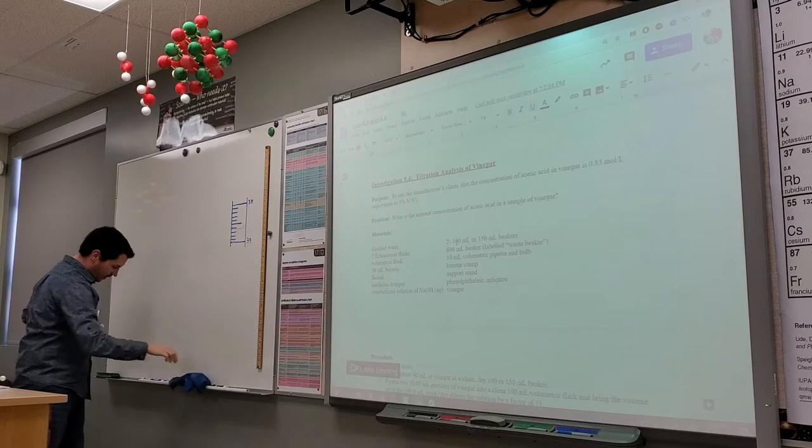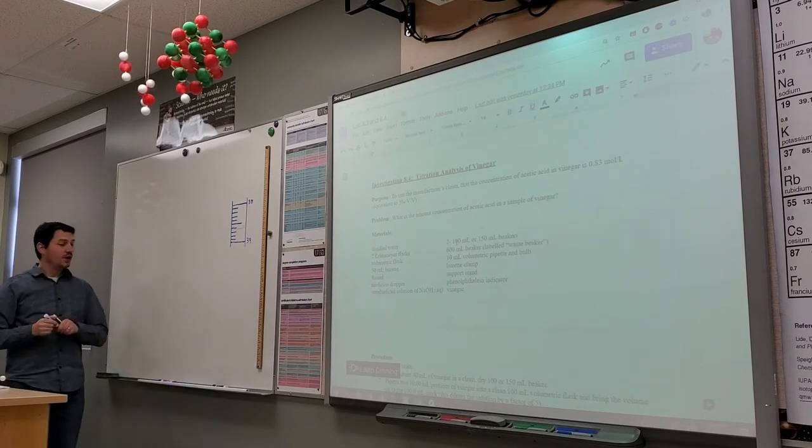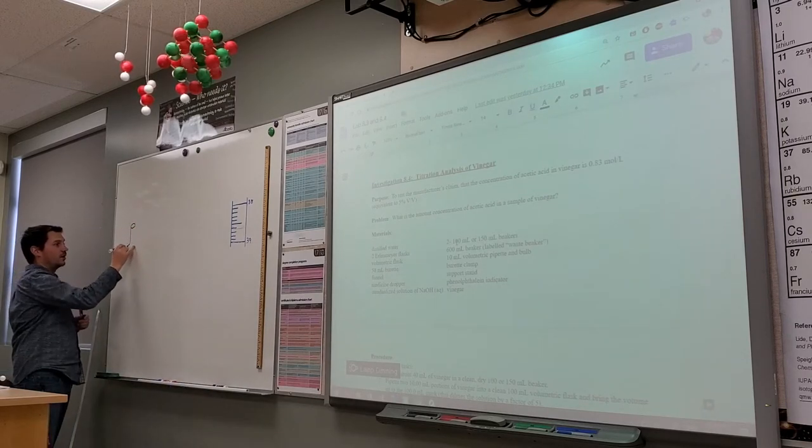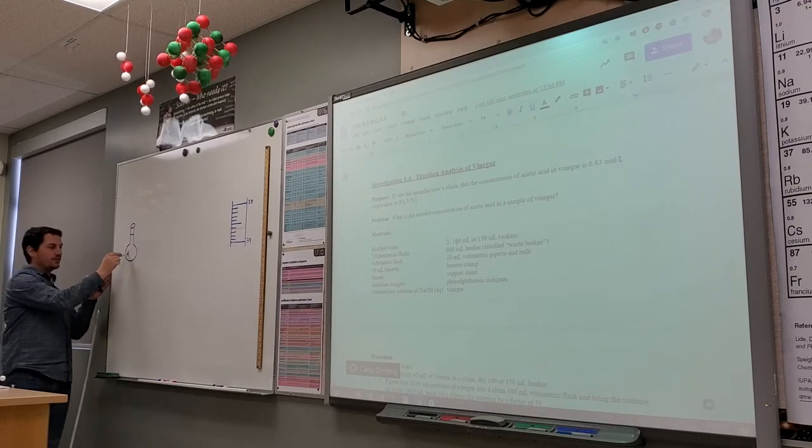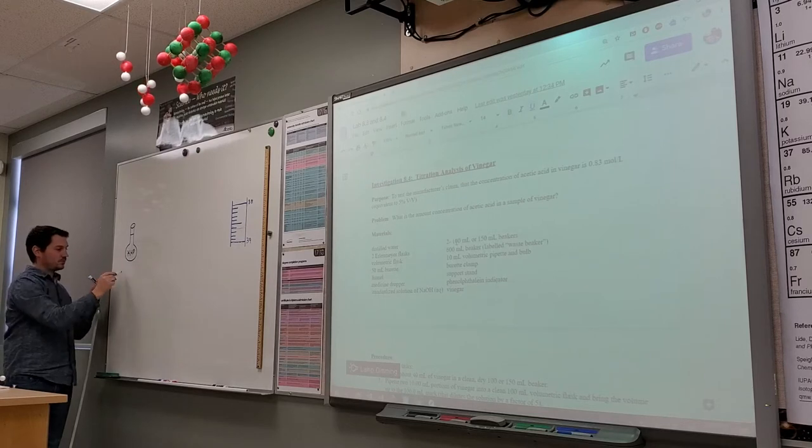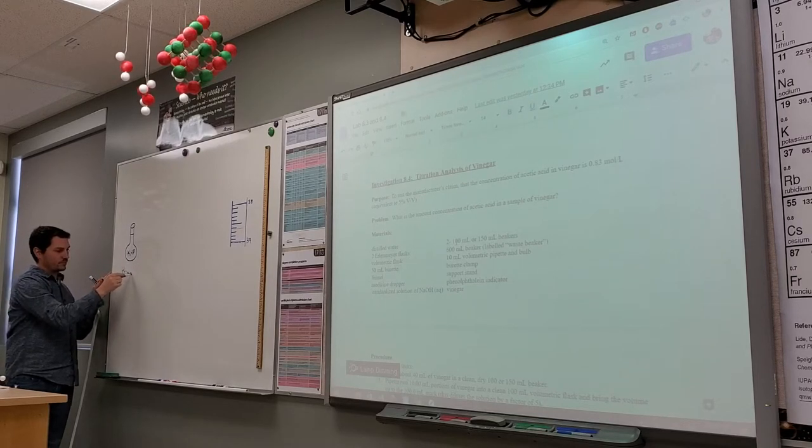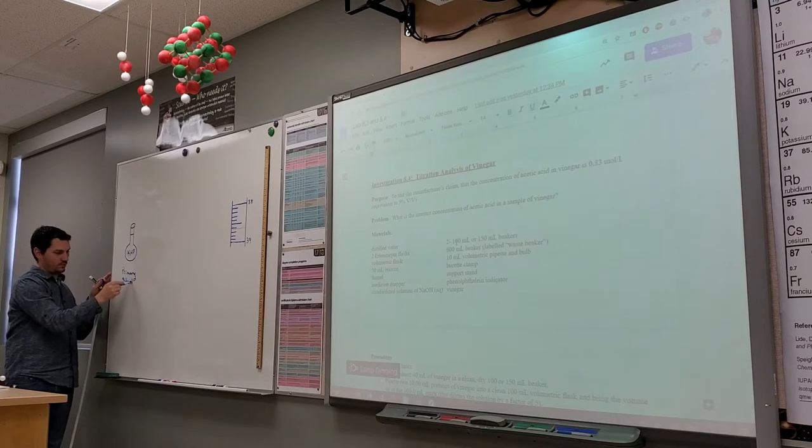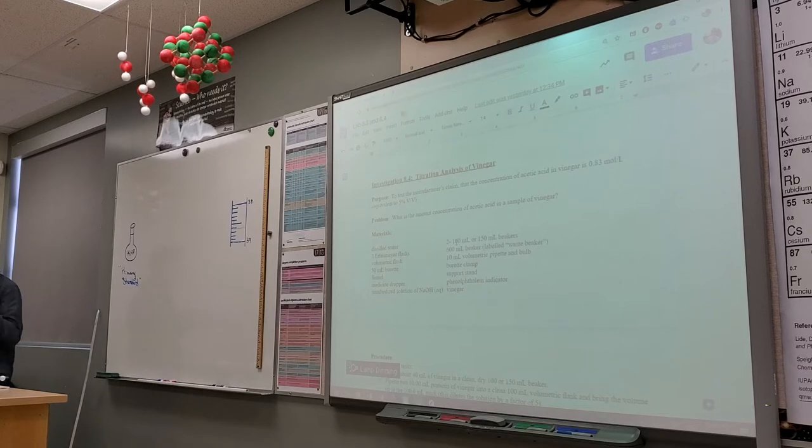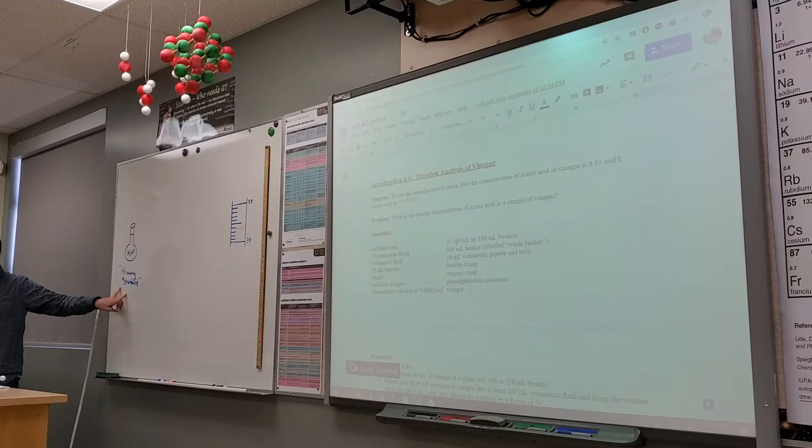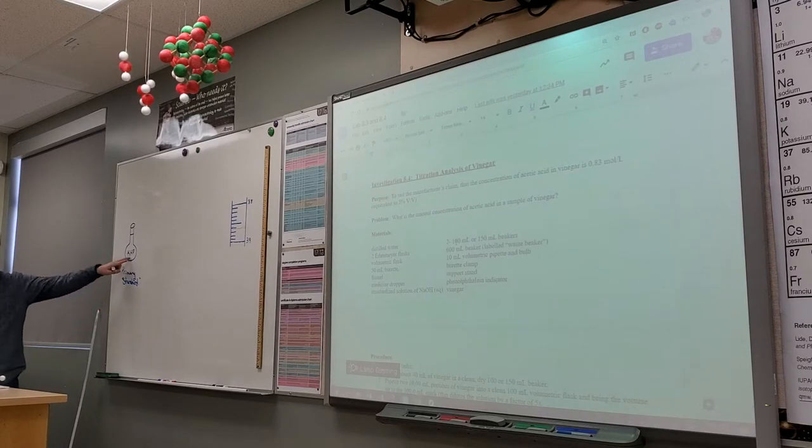When we look at the grand master plan, we made our primary standard. What was the purpose of the primary standard? Why did we make that KHP solution on Monday that we called the primary standard?